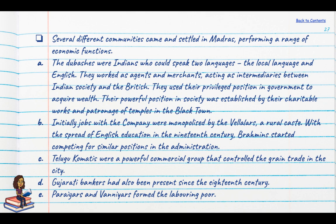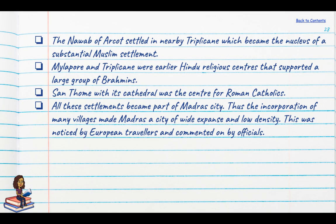The dubashas' powerful position was established through charitable works and patronage of temples in the Black Town. Initially jobs with the company were monopolised by the Velalars, a rural caste, but with the spread of English education in the 19th century, Brahmins also competed for administrative positions. Telugu Komatis were a powerful commercial group controlling the grain trade; Gujarati bankers had been present since the 18th century; and Parayars and Vaniars formed the labouring poor. The Nawab of Arcot settled in Triplicane, becoming the nucleus of a Muslim settlement, while Mylapore and Triplicane were Hindu religious centres, and Santhome with its cathedral was the centre of Roman Catholics.